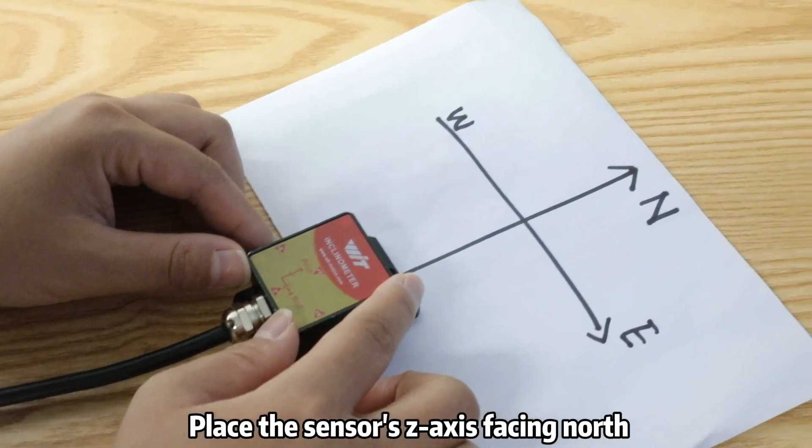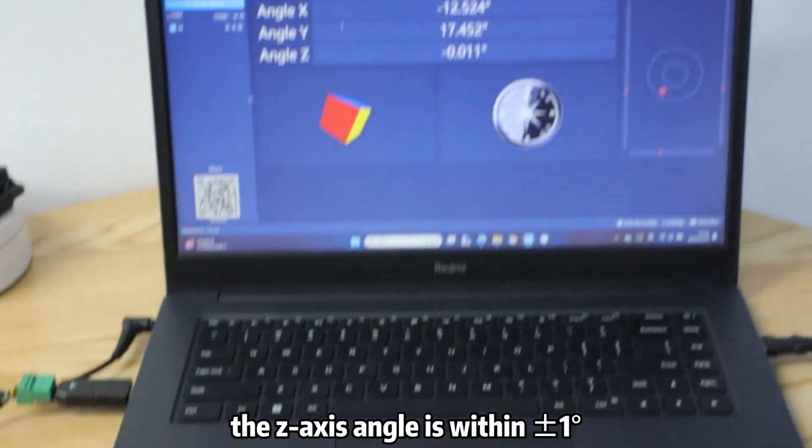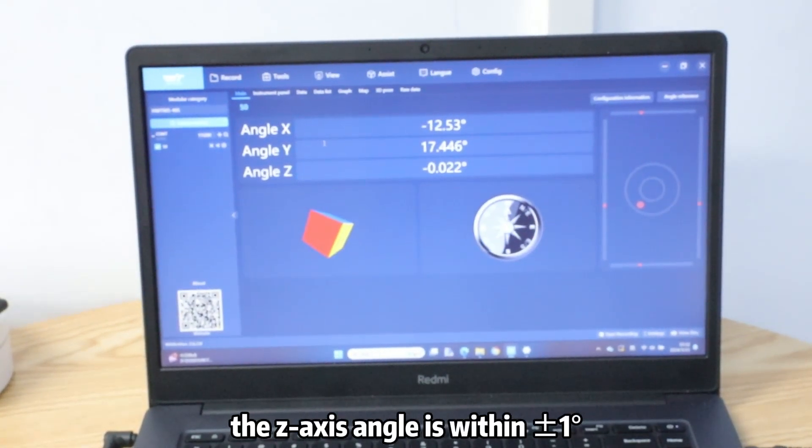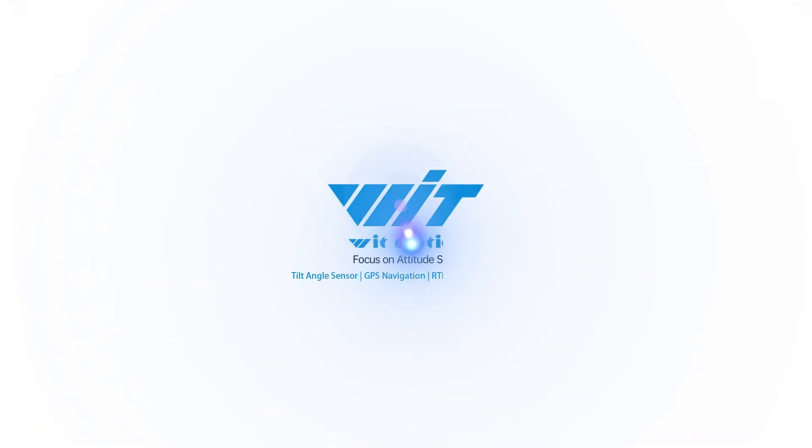Place the sensor's z-axis facing north. The z-axis angle is within one degree.